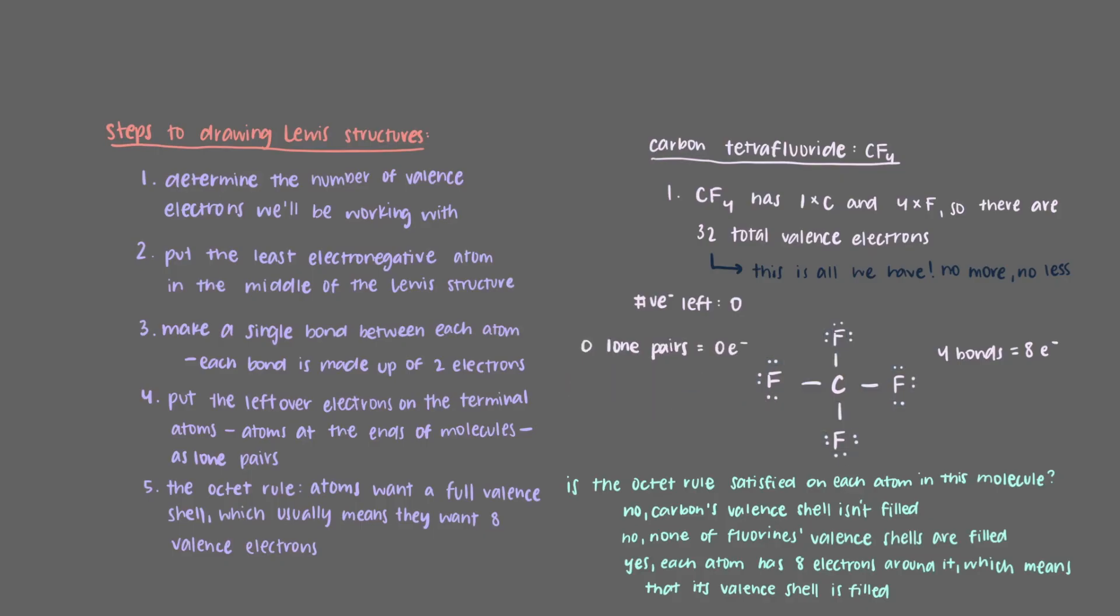Carbon doesn't have any lone pairs around it, but it does have 4 bonds, each of which is made up of 2 electrons. This adds up to 8 valence electrons, and so the carbon atom is also satisfied.